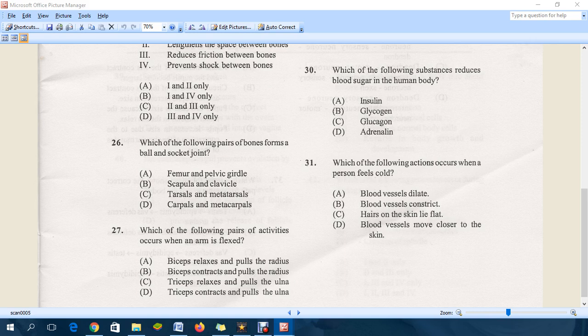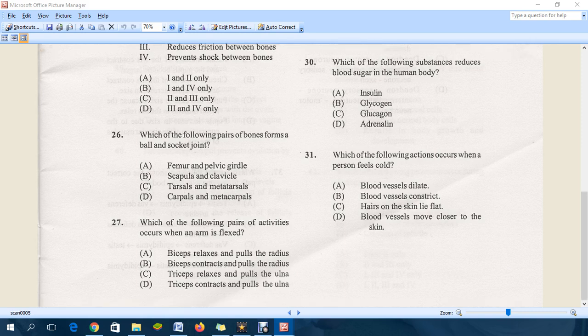Moving down to question 27: which of the following pairs of activities occurs when an arm is flexed? That is bending at the elbow joint. When you flex, the bicep should contract and that will basically pull the radius. B is the correct answer. Again, the question is asking what occurs when you flex or bend the arm at the elbow joint.